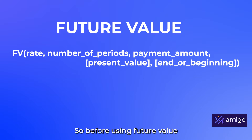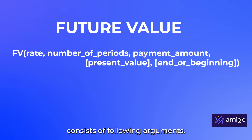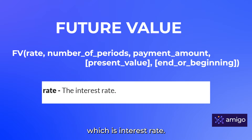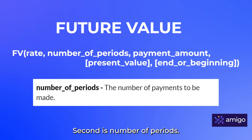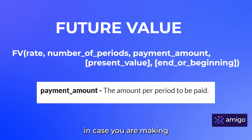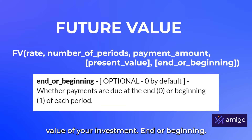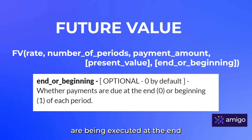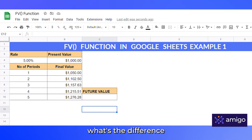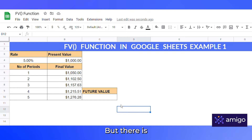Now all these steps could have been done in a single step using the future value function. Before using it, let's look at the syntax. The FV function has the following arguments: the first is rate (interest rate), second is number of periods, third is payment amount in case you're making regular payments, then present value which is the initial value of your investment, and finally end or beginning, which indicates whether payments are made at the end or beginning of the compounding period.